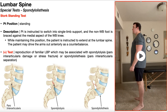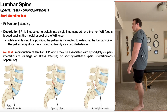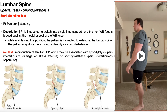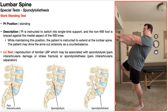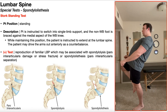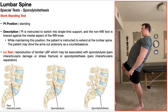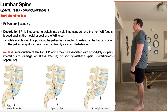Let's look at this test in real time one more time. The patient moves into single limb support, and the non-weight-bearing foot is braced against the medial aspect of the weight-bearing knee. From this stork standing position, the patient is instructed to extend at the lumbar spine — you can use the arms in front as a counterbalance if needed. You're looking for reproduction of familiar low back pain.